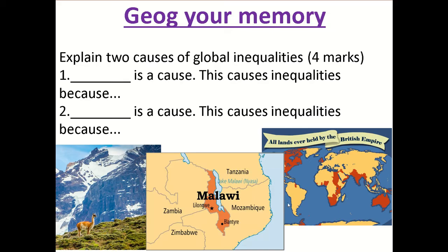The final image shows the countries that were held by the British Empire — countries that were overtaken by Britain hundreds of years ago. Why, if these countries were overtaken by Britain, did that stop them from being able to develop fully or as quickly as the UK? All of you should be able to pause this clip now and have a go at answering that question. Remember, it's a four mark question, so you need to give two points and then explain those points fully as to why they stop the country from developing.